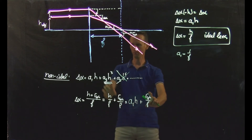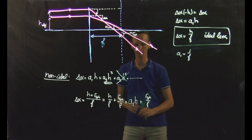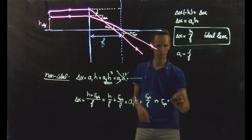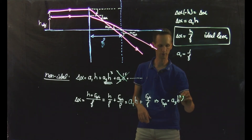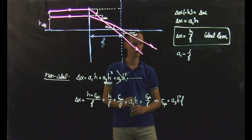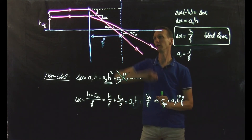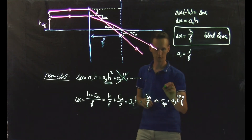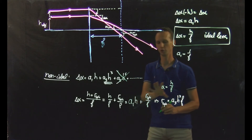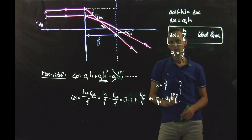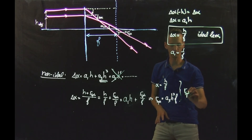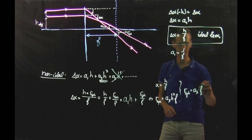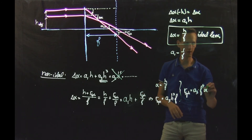We also see that the second term, a3 times h to the power 3, should be equivalent to R spherical over f. From this we can see that R spherical equals a3 times h to the power 3 times the focal distance f. We can also write this in an expression including the opening angle of the beam alpha, given by h over f. Using alpha equals h over f, we see that the radius of spherical aberration R spherical equals a3 times the focal distance to the power 4 times the opening angle alpha cubed.